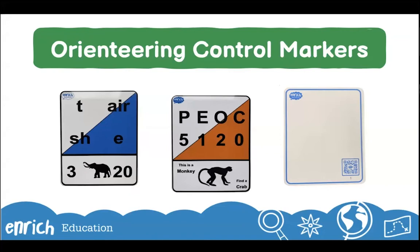Participants have to record information from the control marker to show they visited the control point. For smaller courses such as those on school sites, markers containing series of letters, numbers, and pictures provide an almost unlimited number of permutations. Children could be collecting the second letter, the fourth number, or all four marker numbers. This means children will never become too familiar with the course and must always visit the markers to collect the required information. These combinations also provide lots of potential for cross-curricular activities.